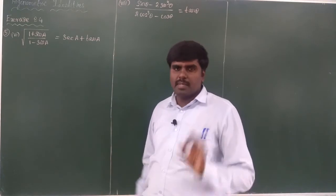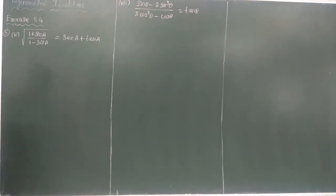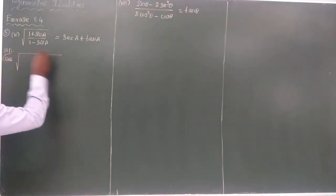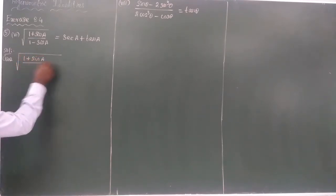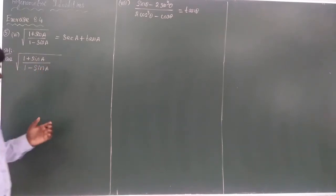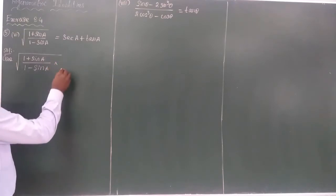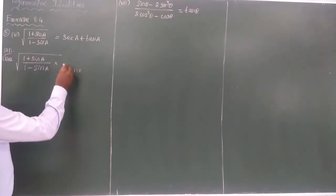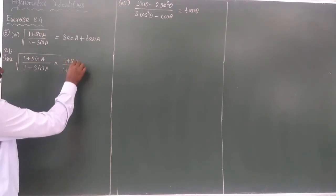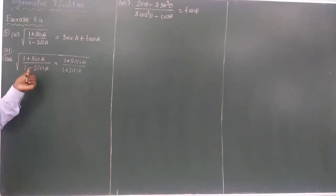This type of problem comes many times in board examinations. The given problem is the square root of (1 + sinA) divided by (1 - sinA). I am taking the conjugate of the denominator value. The denominator is 1 - sinA, so its conjugate is 1 + sinA. We multiply both numerator and denominator by 1 + sinA. In square root problems, if the denominator has a minus sign, take the conjugate with a plus sign, and vice versa.